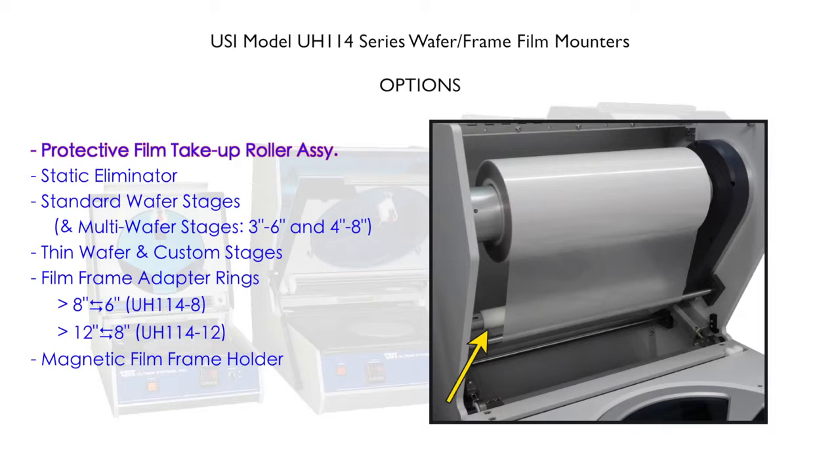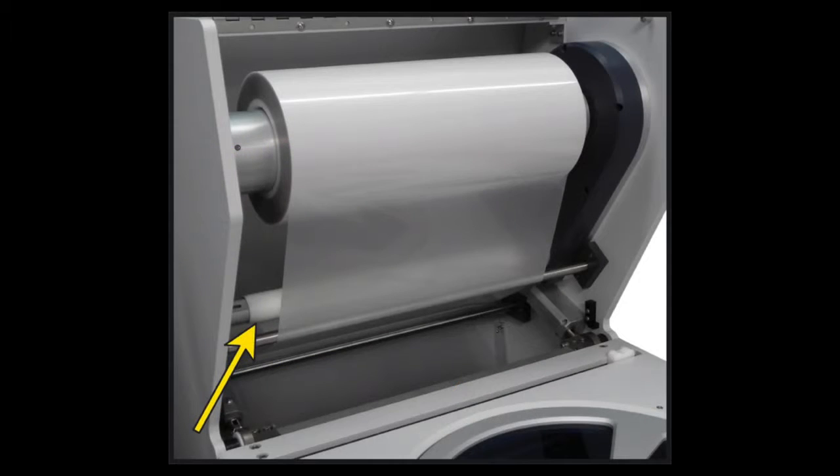Protective film take-up roller assembly. The protective film take-up roller assembly will accommodate backed film whether its protective backing is facing towards either the inside or the outside of the roll.